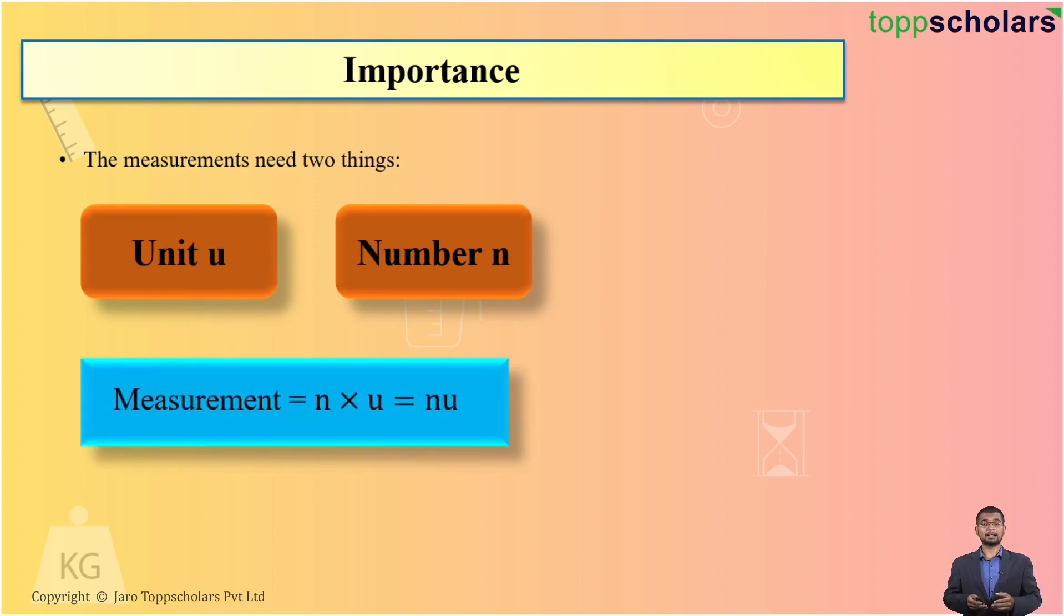And thus, a measurement can be written as the number into the unit. Suppose, if I ask you in 10 kg, what is the magnitude? 10 is the magnitude. And what is the unit? It is 1 kg, not only kg. It is 1 kg.